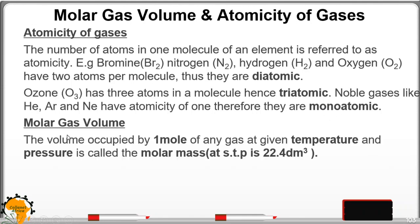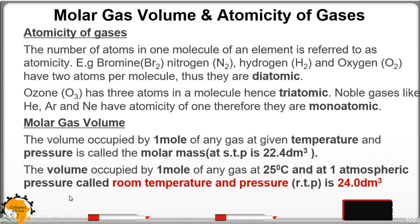Molar gas volume. The volume occupied by one mole of any gas at any given temperature and pressure, it's called the molar volume. At STP, it is 22.4 dm³. The volume occupied by one mole of any gas at 25 degrees centigrade at one atmospheric pressure, called room temperature and pressure, RTP is 24.0 dm³.